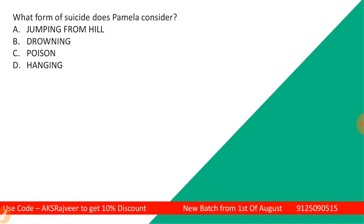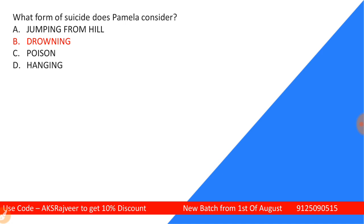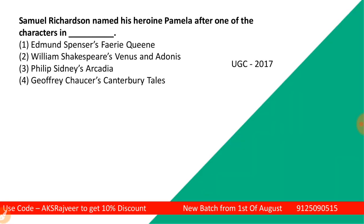Next question: What form of suicide does Pamela consider? Options are jumping from a hill, drowning, poison, or by hanging. The correct answer is drowning — Pamela considers drowning.